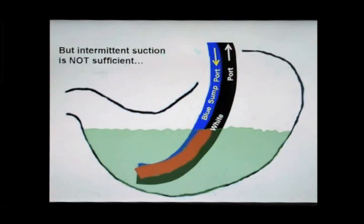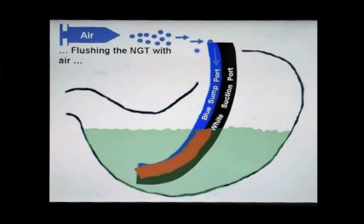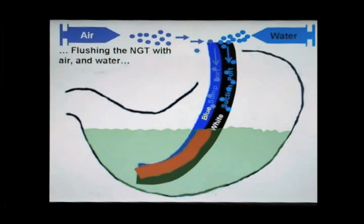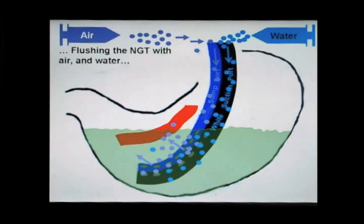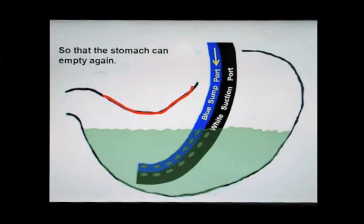However, intermittent suction is not sufficient. Flushing the NG tube with air and water pushes the mucosa away from the holes so that the stomach can empty again.